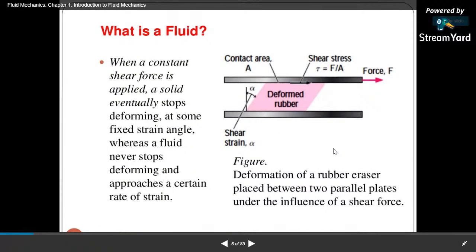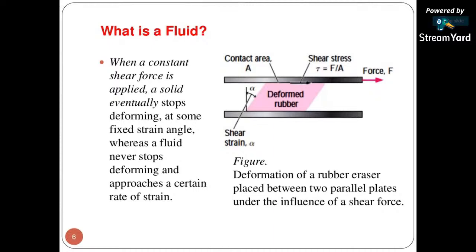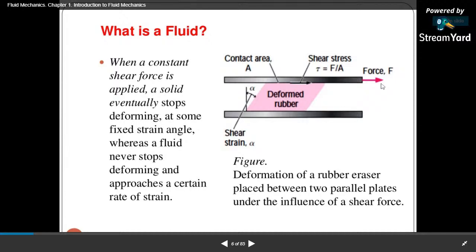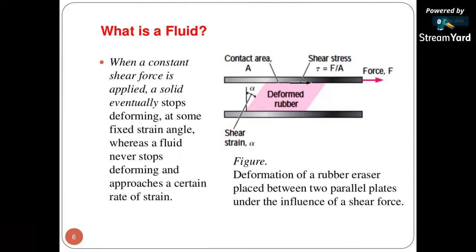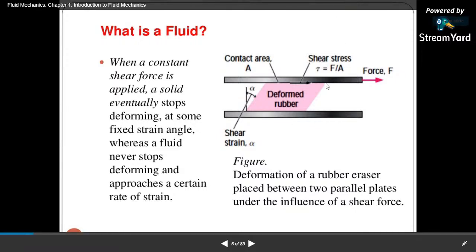To illustrate what is fluid: suppose we are putting a deformed rubber between parallel plates. There is a contact area, and we apply a shear force in the direction of positive x. After applying that force, some angle alpha is produced — the body is trying to deform — and for that deformation some shear stress is taking place at the contact area. This is in the case of solid.